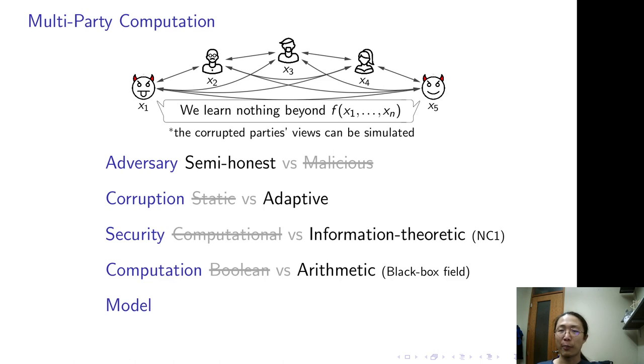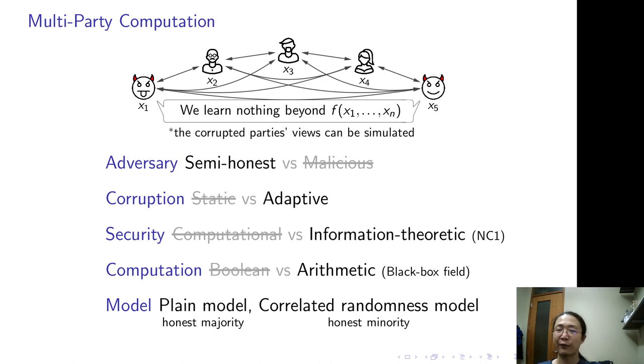As for model, we present two constructions in different models. Our construction in the plain model tolerates less than half n corruptions. The other construction lies in a correlated randomness model. I will introduce it later. It tolerates any number of corruptions.